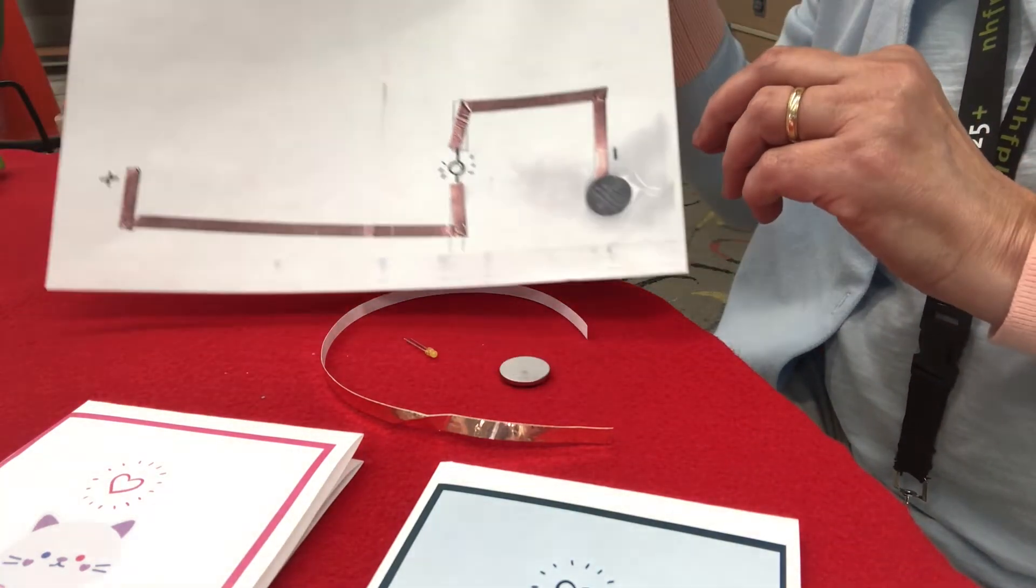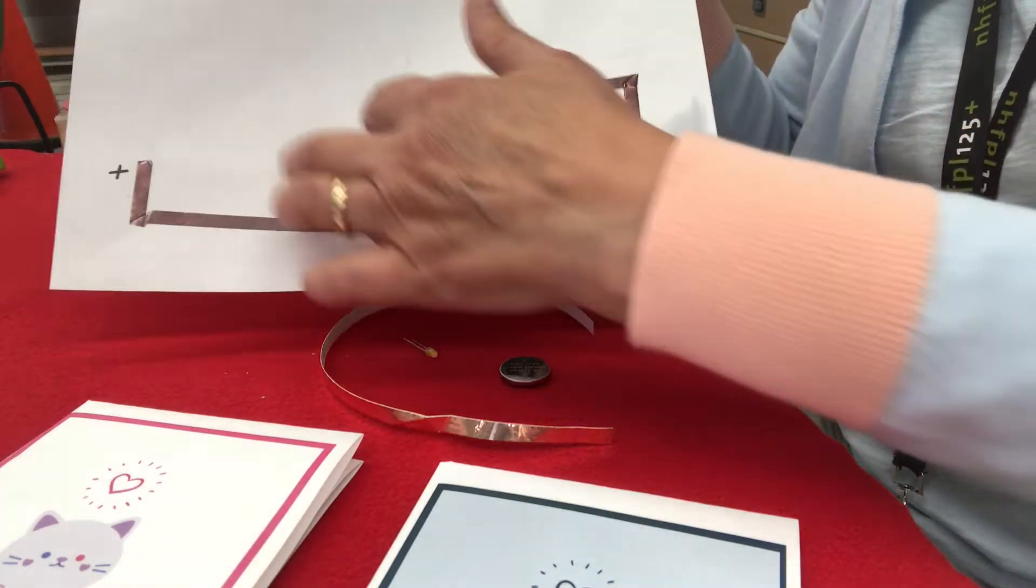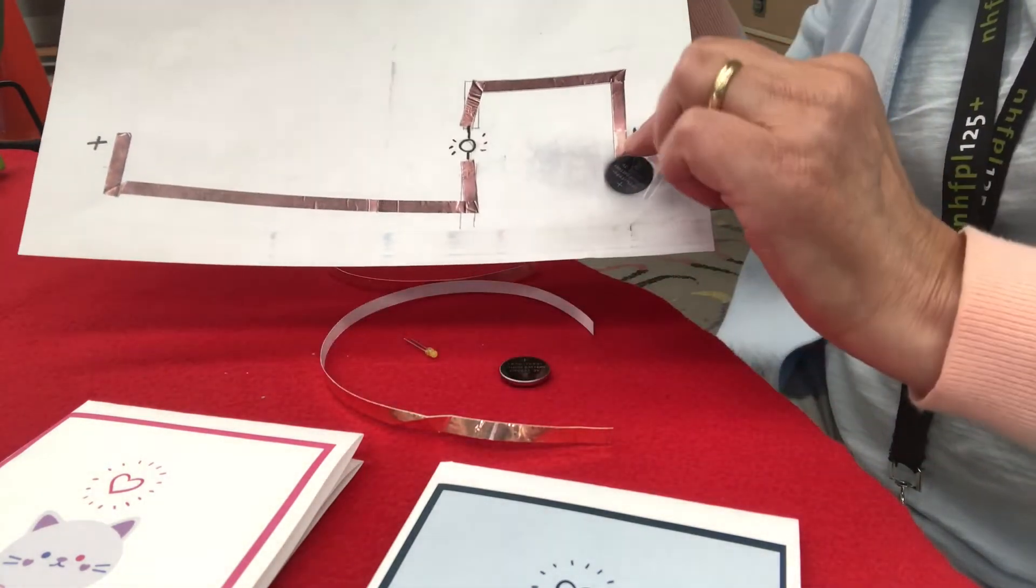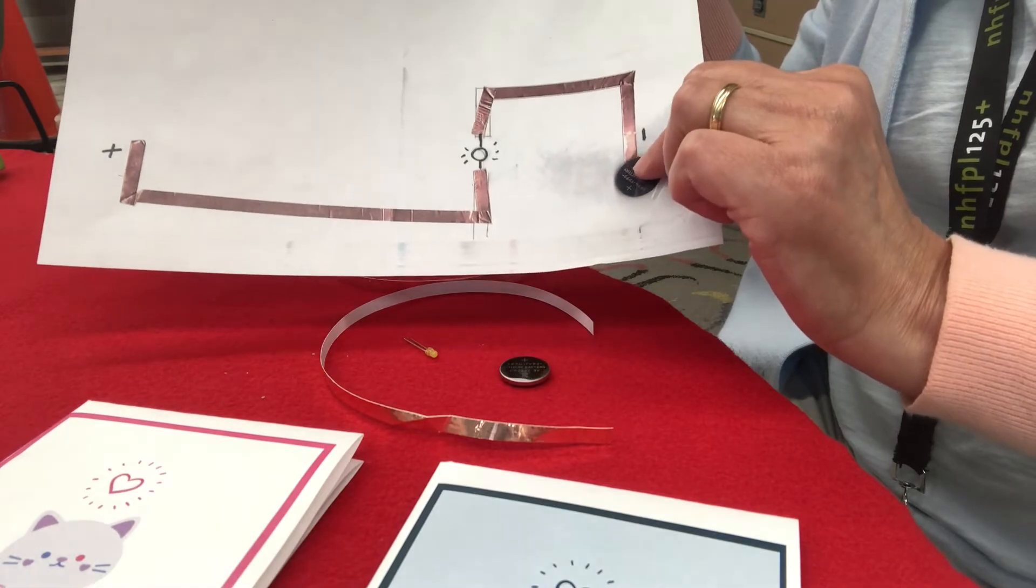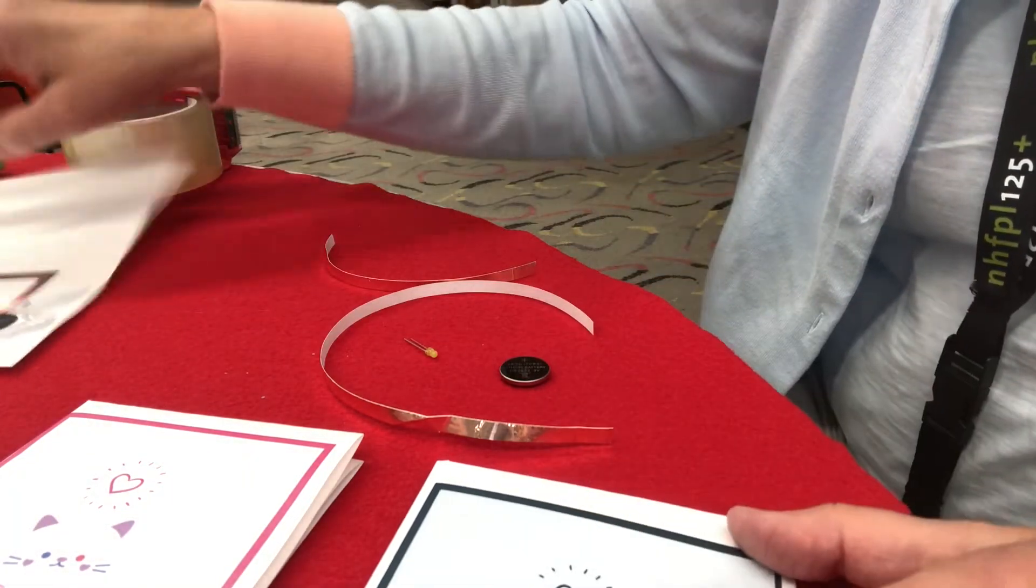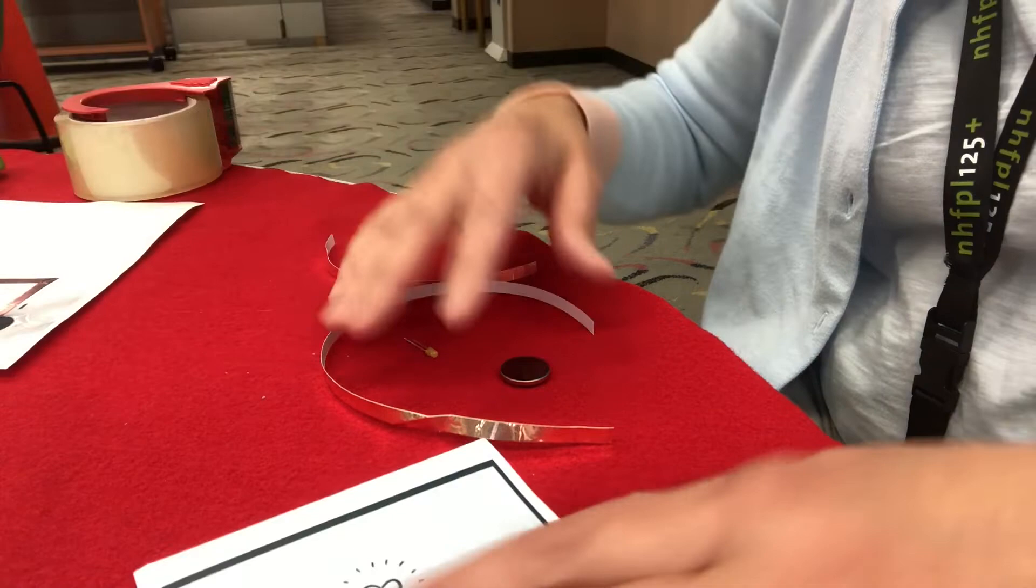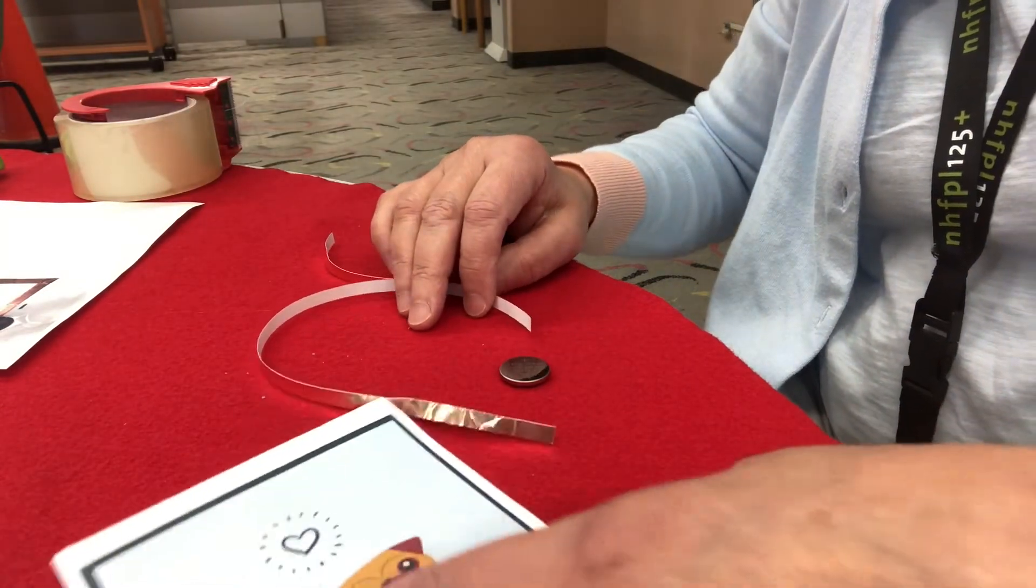Again, notice that this circuit is what's called an open circuit. It needs to be closed. In other words, there can't be any ends that aren't connected to all other parts of the circuit. So I'll show you how we're going to close the circuit by closing the card.